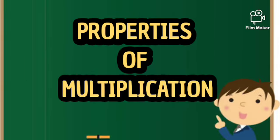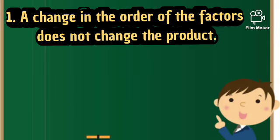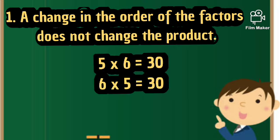Let us now look at the properties of multiplication. The first property is a change in the order of the factors does not change the product. Let us take the example.